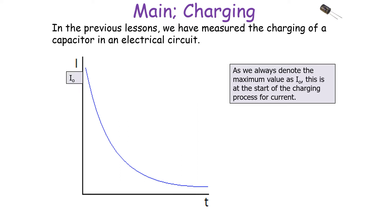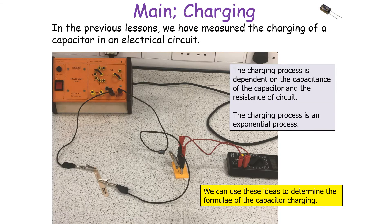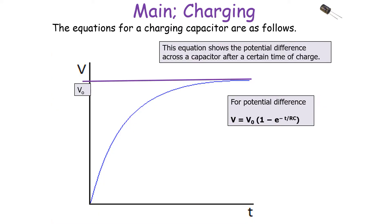The maximum value of current is I0, which occurs at the start of the charging process. The charging process is dependent on the capacitance of the capacitor and the resistance of the circuit — it is an exponential process. We can use these ideas to determine the formulae for capacitor charging. Because it is an exponential process, for potential difference we can work out how much the potential difference will change with respect to time during charging.